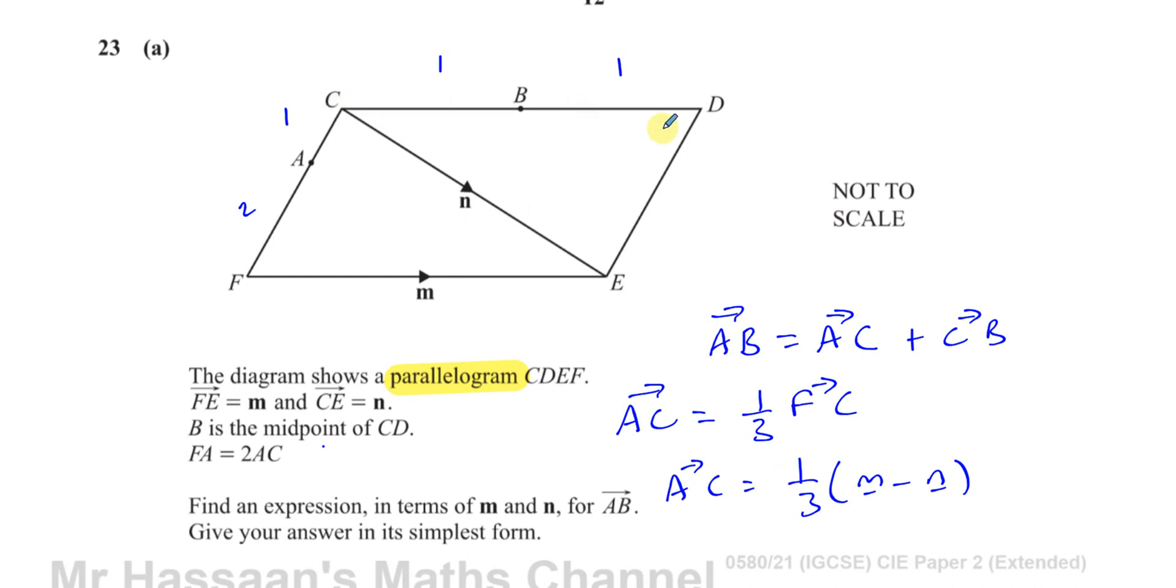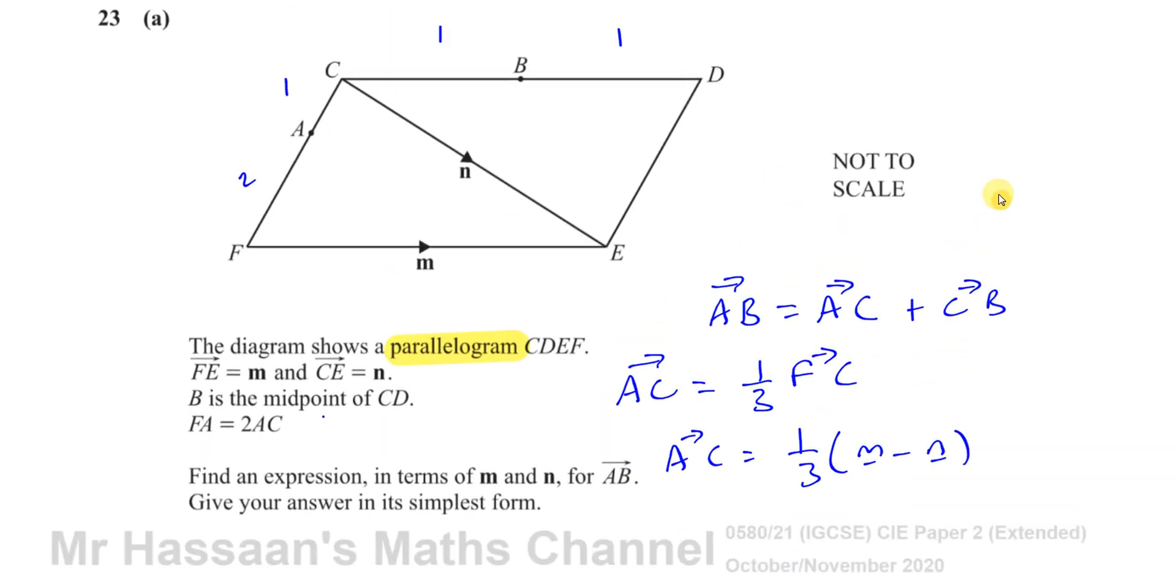We found A to C. We need now to find C to B. Now if we look at C to B, C to B is pretty easy because this is a parallelogram, so the opposite sides are parallel. So this side is parallel to this side, and they're also equal in length. So I know that C to D is the same as F to E. They're both equal to the vector M. So C to D is M, and C to B we know is a half. C to B is going to be a half of C to D, so it's a half of M.